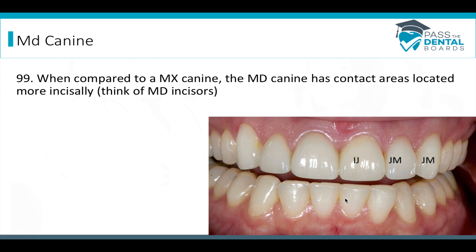When compared to the maxillary canine, the mandibular canine has contact areas positioned more incisally. On the lower arch, instead of IJJMJM, the contact pattern is IIIIIM — mostly all incisal until you get to the distal contact of the canine, which is middle. Both canines have their distal contact in the middle, but the lower canine's middle contact is positioned a little more incisally than the maxillary canine's. Everything on the lower is generally more incisally positioned.